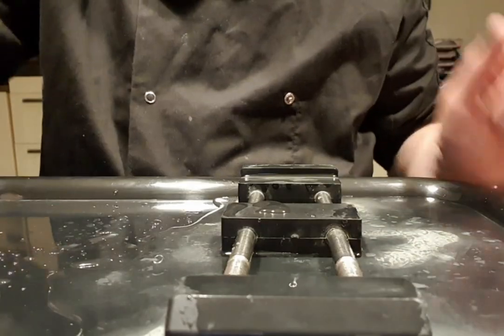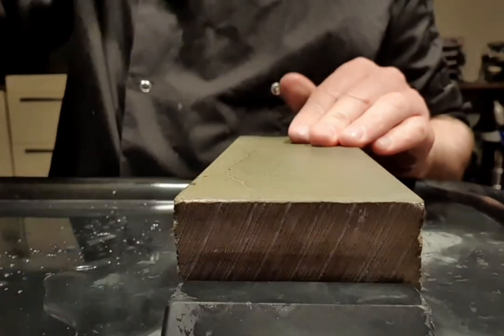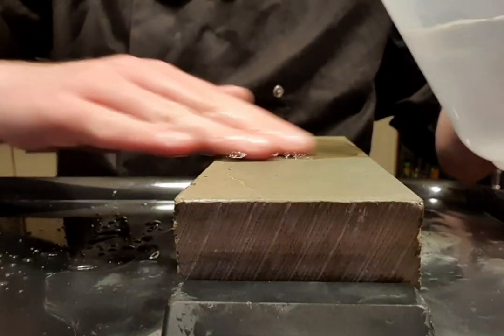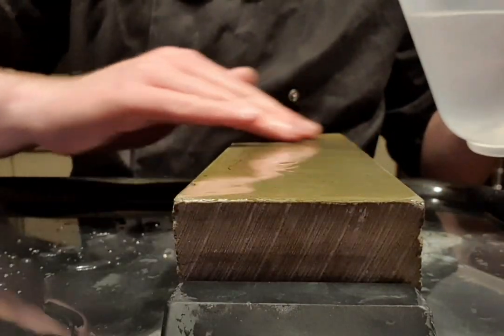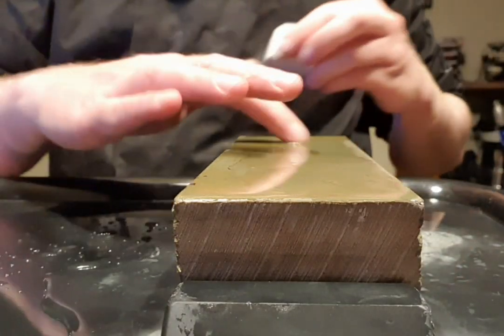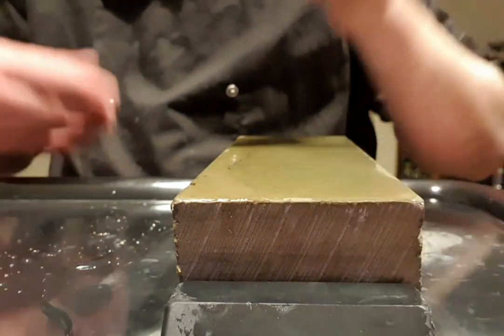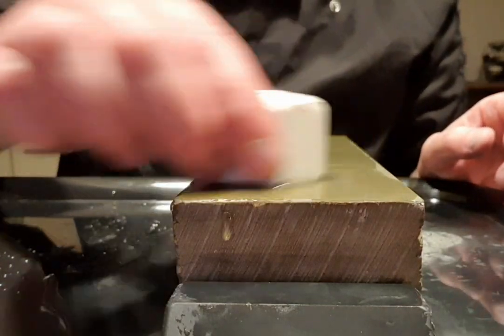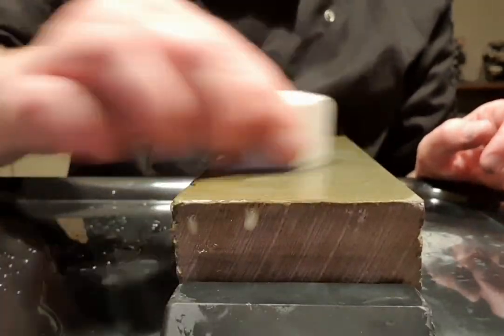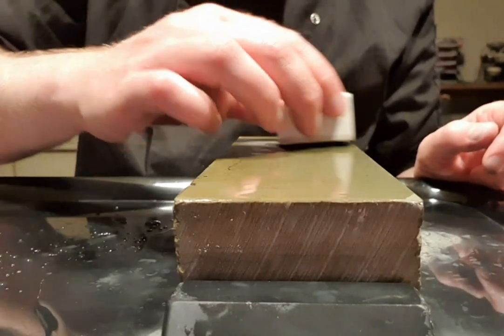We're gonna move to the J-nat, a Nakayama LV5++ from Kyoto. Thin layer of water, and we're gonna start with our first slurry stone, the Asano nagwa Tenju. The Tenju has a grit of seven to 8k. We have a nice slurry now.